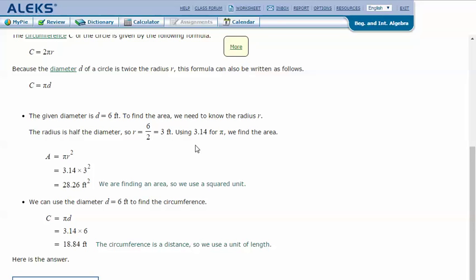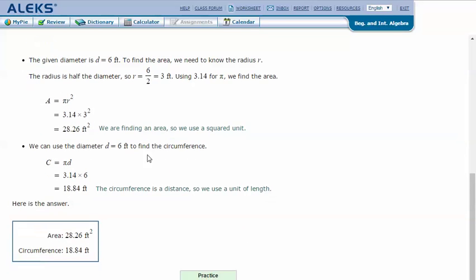Using 3.14 for pi, we find the area. Area equals πr², so plugging in the numbers into this formula: 3.14 times 3 squared equals 28.26 feet squared.